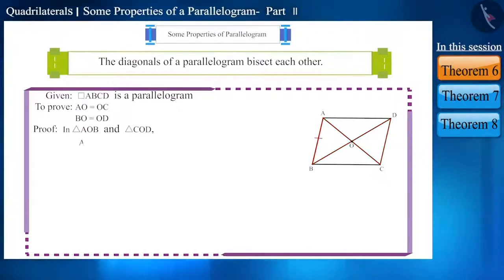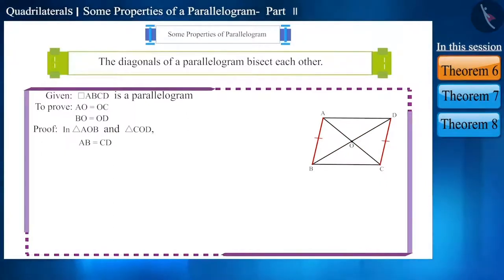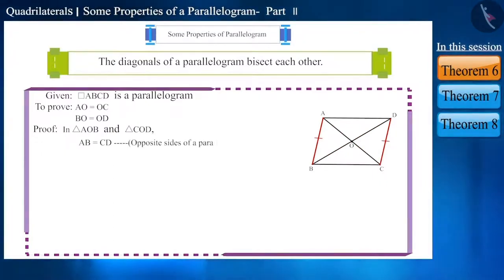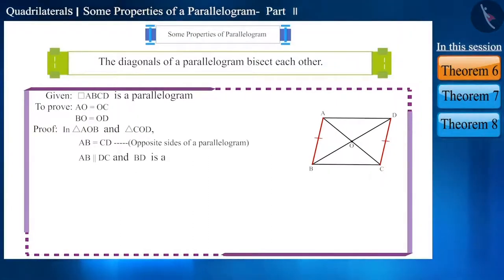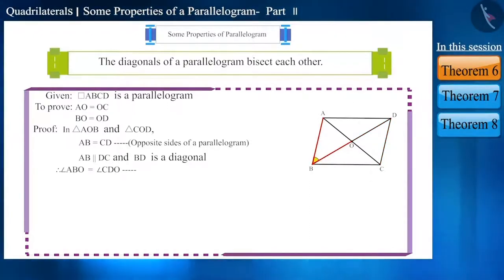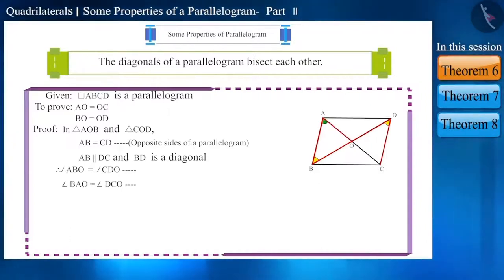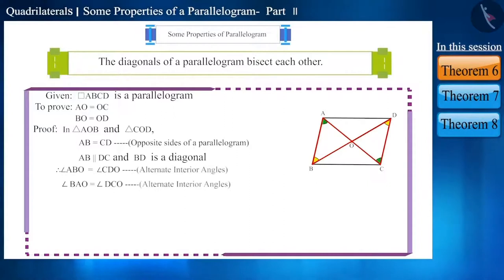In both these triangles, side AB is equal to side CD. Can you explain the reason for this? Because the opposite sides of a parallelogram are equal. Here, side AB is parallel to side DC and BD is a diagonal. Therefore, angle ABO is equal to angle CDO and angle BAO is equal to angle DCO, because both of these are alternate interior angles.